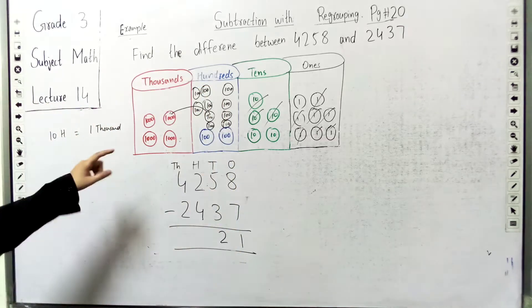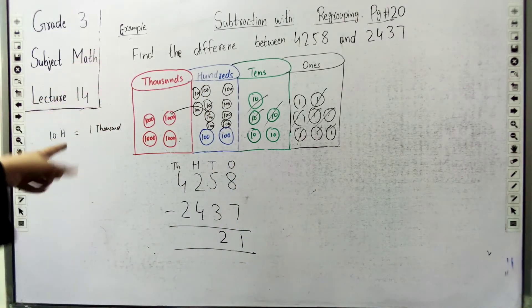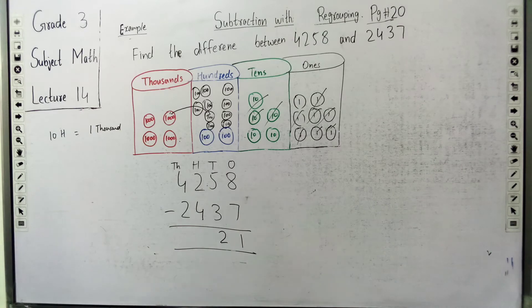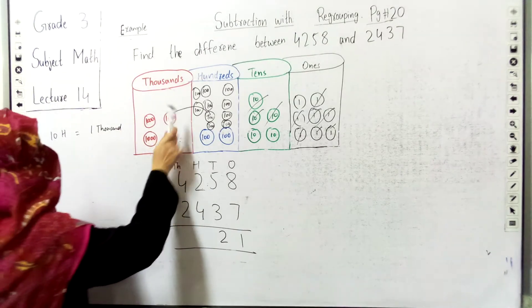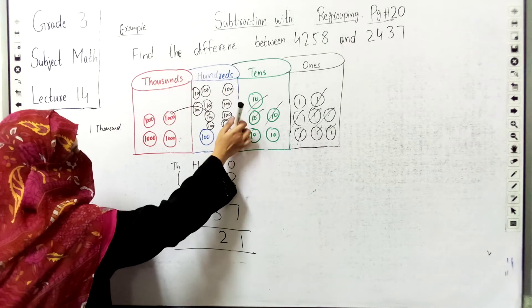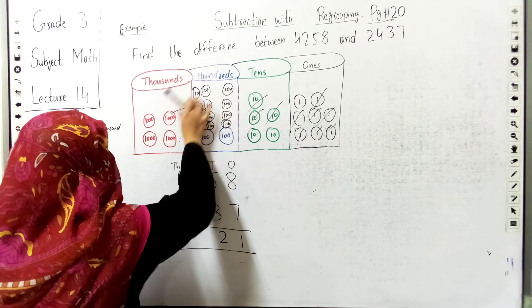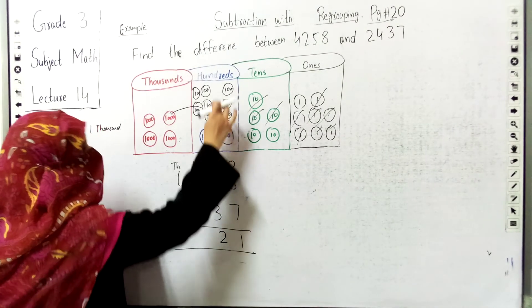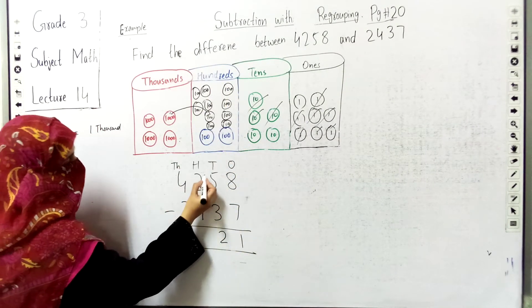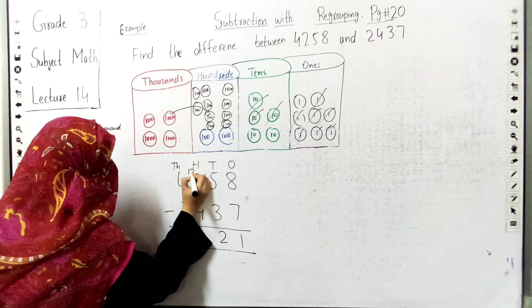So this one thousand block was shared with the hundred blocks. One thousand equals ten hundreds. When the hundred work came, it was ten blocks of hundred. So here we have two blocks plus ten, which equals twelve. So we will write twelve here.